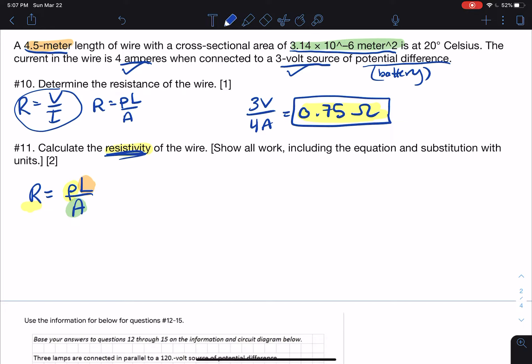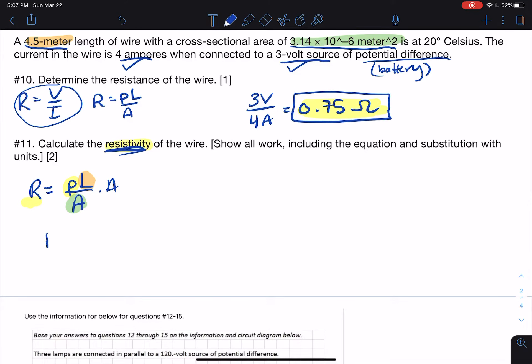So I'm just going to rewrite this equation. I'm going to multiply by A on both sides. So that's going to be RA equals ρ times L. And then I'm going to divide by L on both sides. And so what I've done is I've rewritten the equation to be written to solve for this, to solve for the resistivity. So it's the same equation, I just rearranged it.